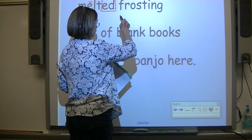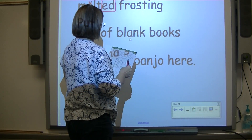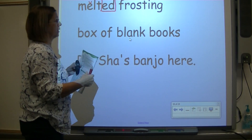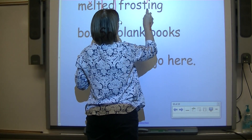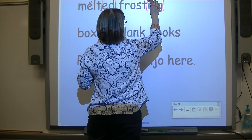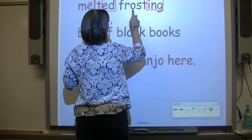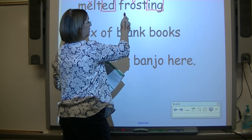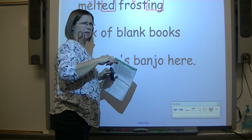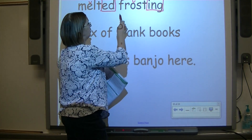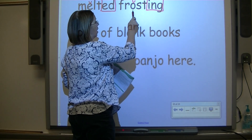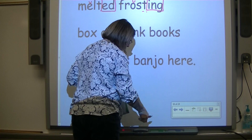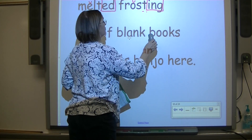This one also has a suffix — ING. Cover it up and we still have the root word. A vowel followed by a consonant is short — code it with a breve. Here's a blend and here's another blend. It's important to know these blends. Read with me: F-R-O-S-T, frosting. So the phrase is: melted frosting.